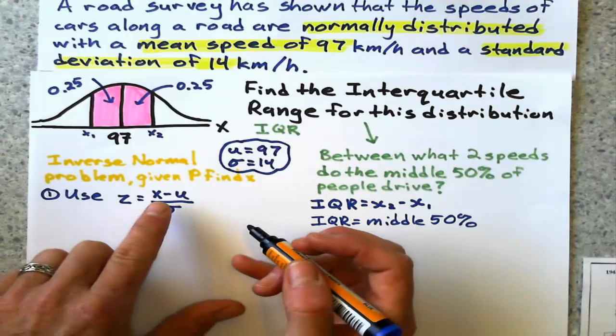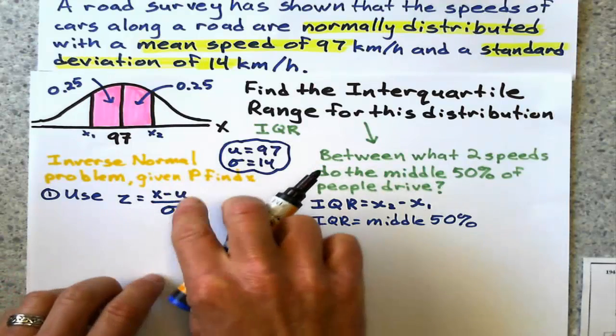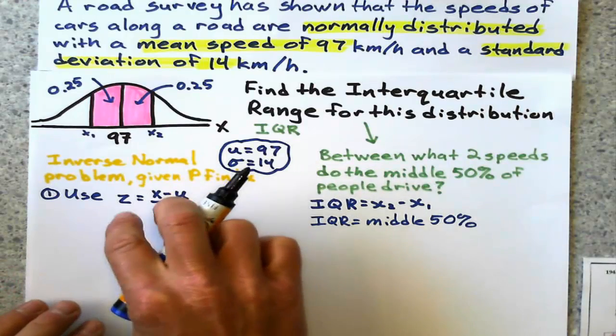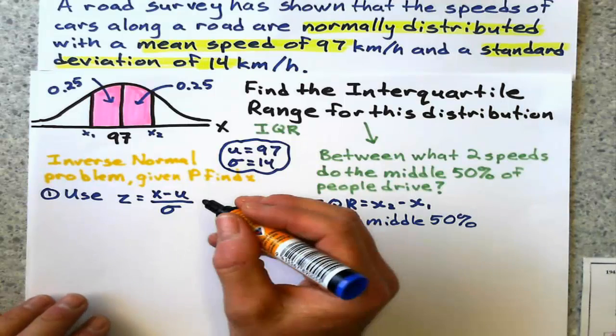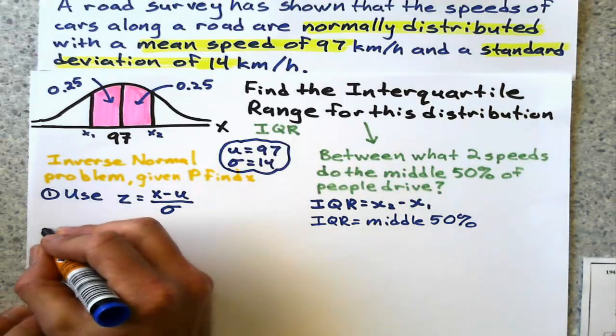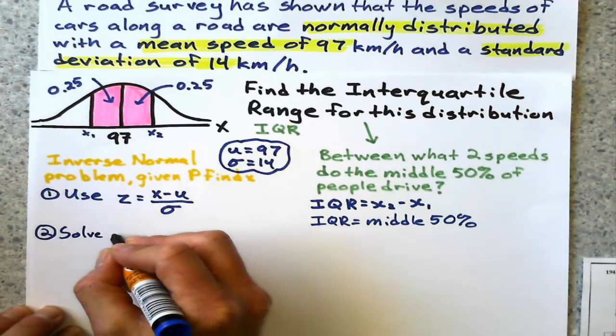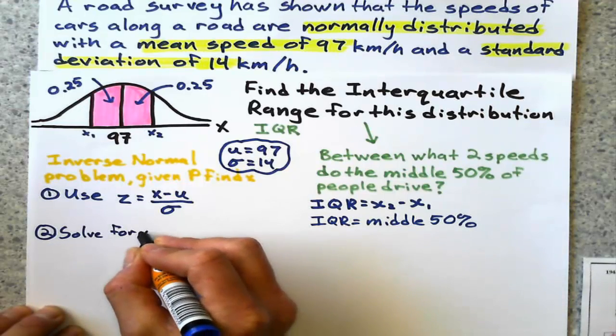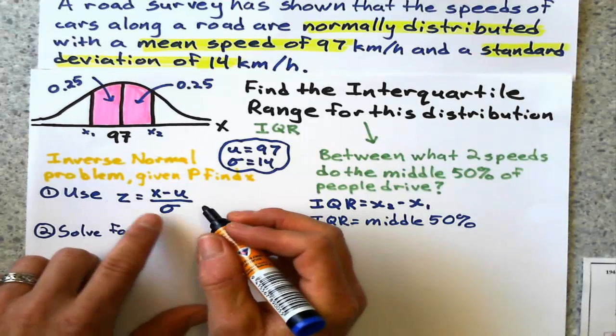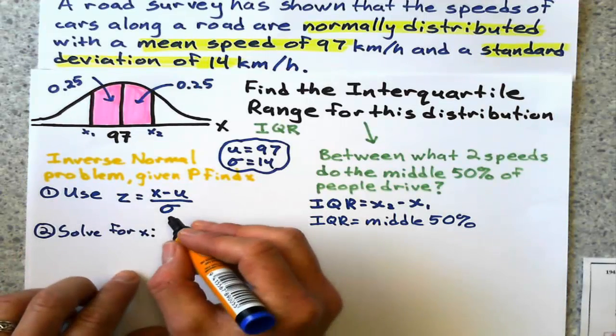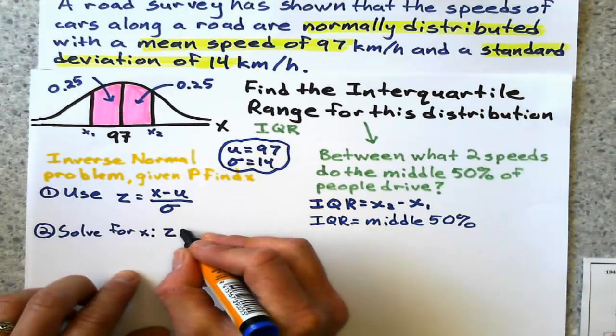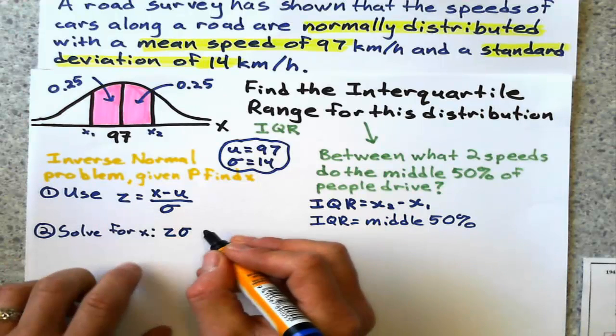We're solving for X, so I'm going to use some algebra and rearrange this equation to solve for X. I multiply Z by the standard deviation, and that equals X minus μ.